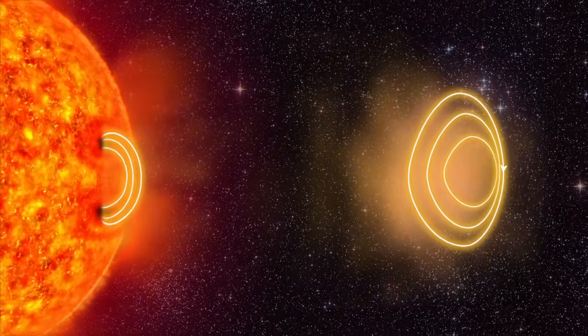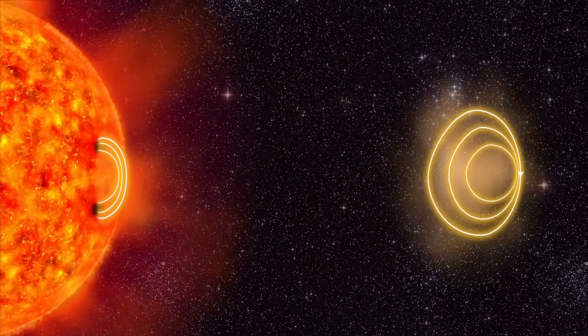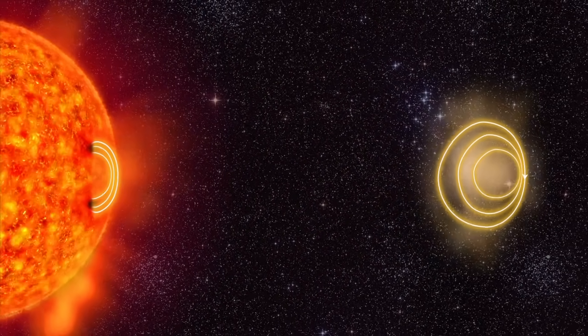Several billion tons of plasma is hurled out from the sun. This is called a solar storm.